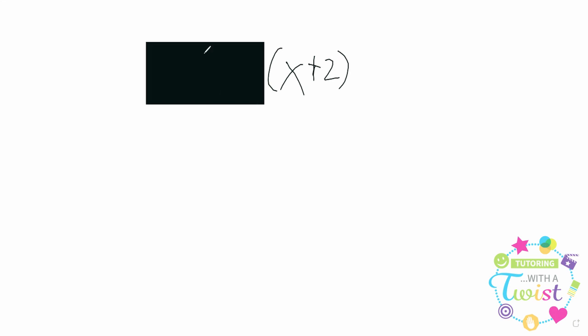There's the mystery. We don't know what's inside there, but we know it's being multiplied by x plus 2. Well, just in the same way that we can distribute that 7 across the x plus 5, we can distribute this mystery black box across that x plus 2.